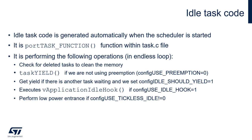At the beginning, it is checking the list of the deleted tasks and cleaning the memory. This is an important point because when we decide to delete a task, it is not deleted automatically from RAM, but it will be deleted on the first execution of the idle task after that operation.